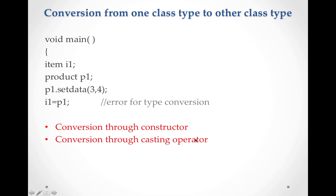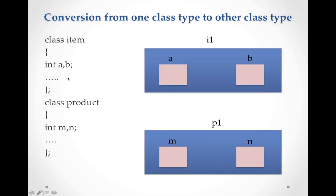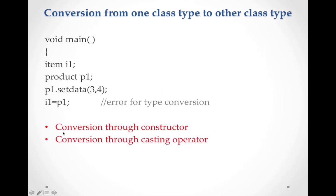You are not supposed to write the full coding for this in your paper — just mention the theory. Private variables cannot be accessed across classes, so direct conversion is not possible. The compiler searches for a constructor or casting operator. For built-in to class type, use a constructor; for class type to built-in, use the casting operator; for class to class, both methods are valid.